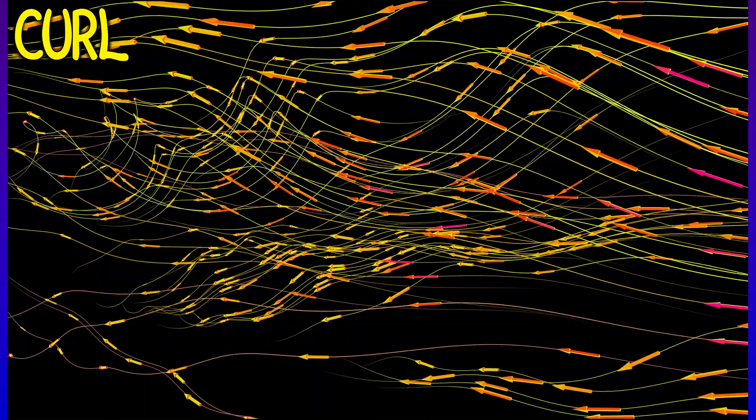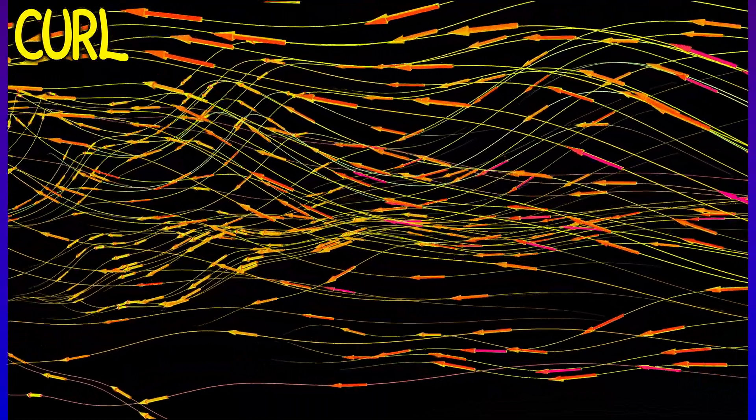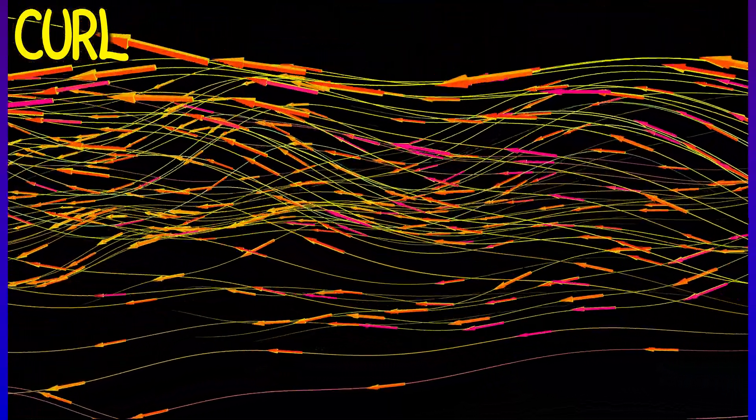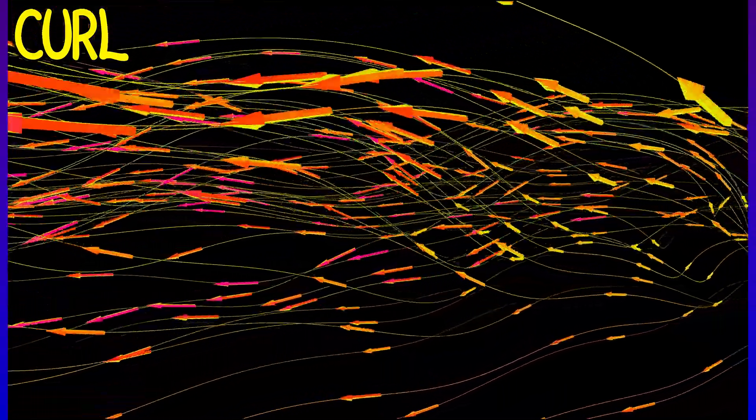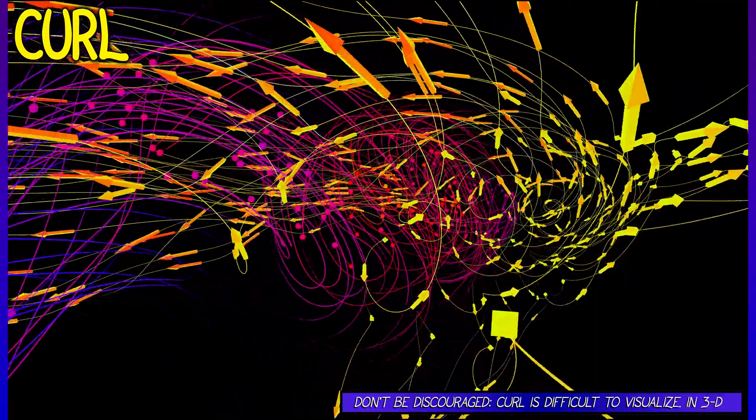Because the curl is a vector field, you can think of its flow lines. That might be helpful as far as visualizing what's going on. But in general, curl is really difficult to visualize.